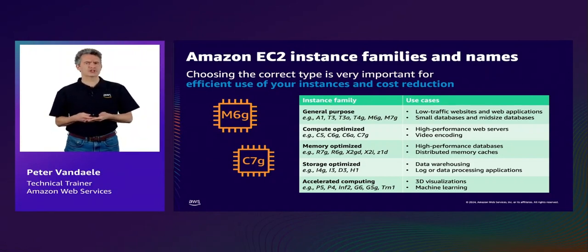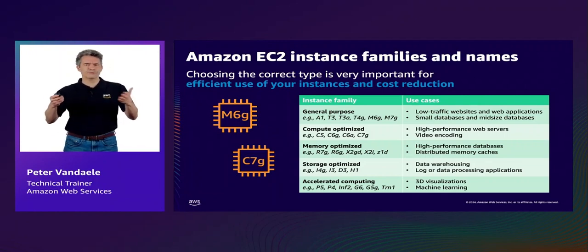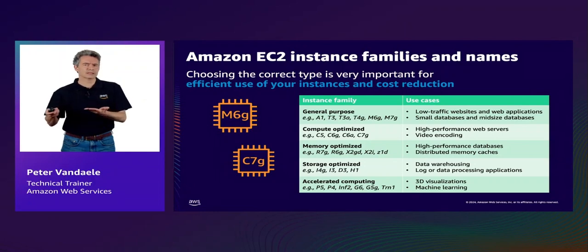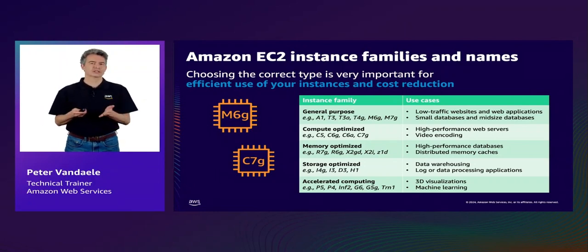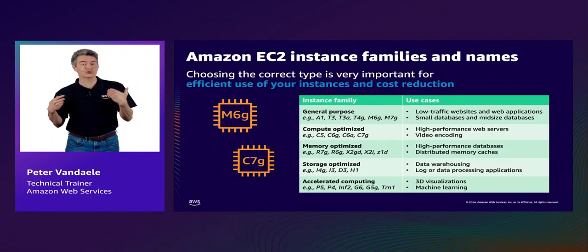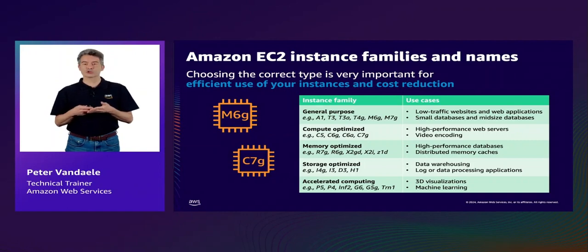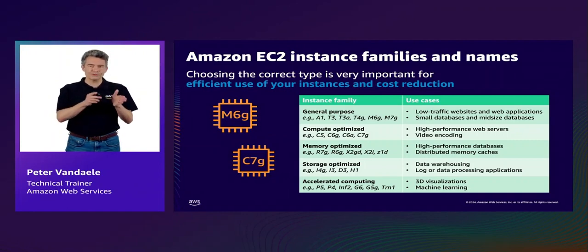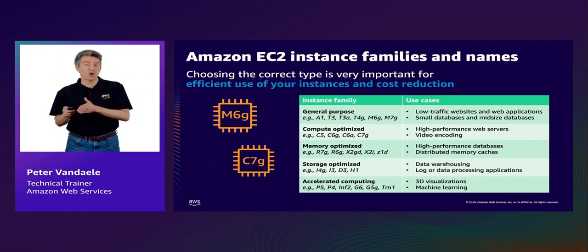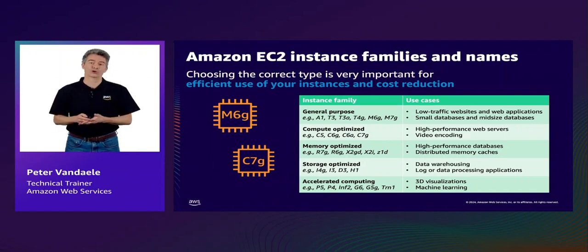If you're interested in machine learning, 3D modeling or inference, choose an accelerated computing instance like the powerful P5 or G6, or our in-house Tranium processors. Each instance type also comes in different sizes, allowing you to be as cost-effective as possible while still getting your work done.